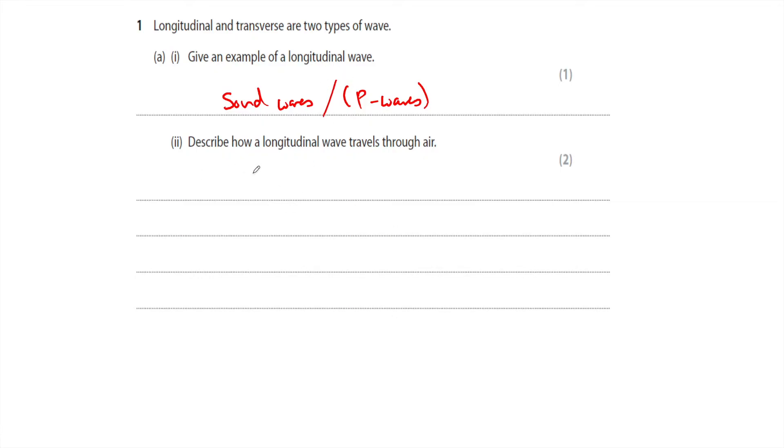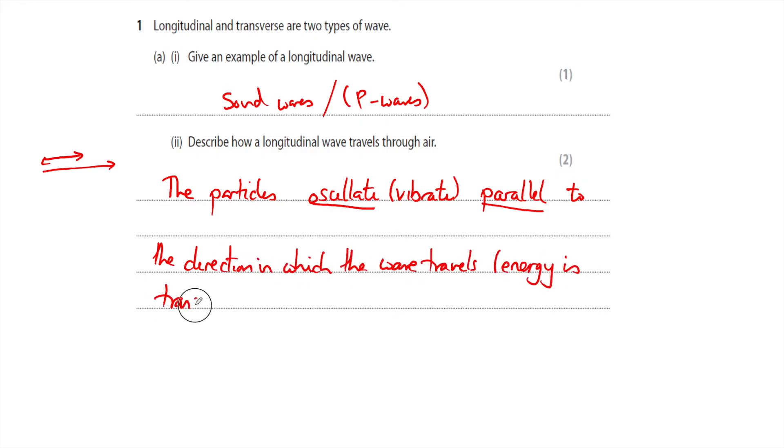Describe how a longitudinal wave travels through the air. Remember, a longitudinal wave oscillates parallel to the direction in which the wave is traveling or in which the energy is transferred, and that's the best definition. The particles oscillate, vibrate parallel to the direction in which the wave travels. Energy is transferred.